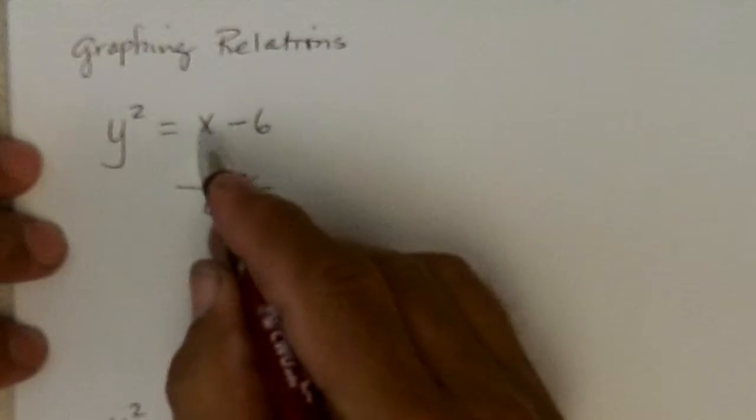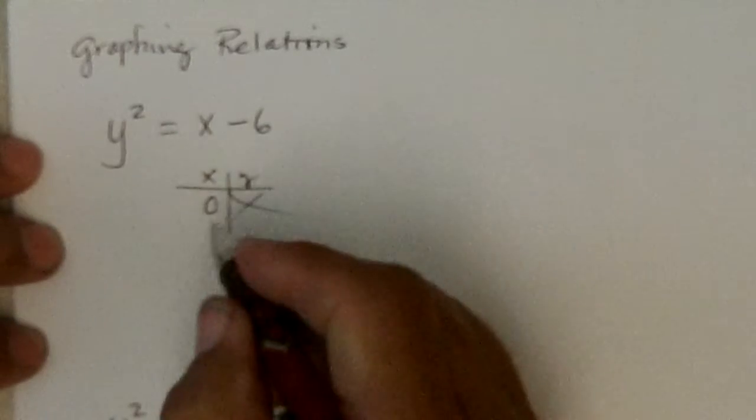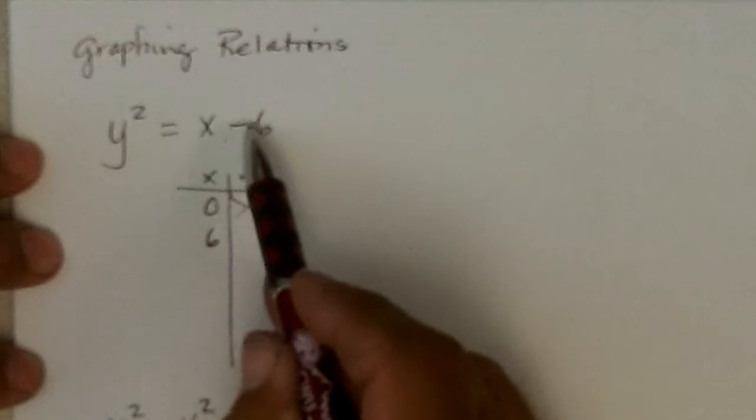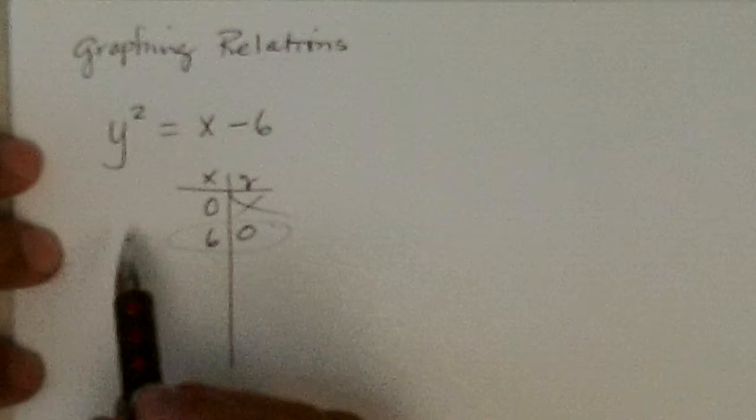If we put in 1, we'd still have a negative, or 2, or 3, or 4, or 5. This is still negative, and we can't have y squared negative. But if we put in 6, 6 minus 6 is 0, and 0 squared. So we finally get a point.